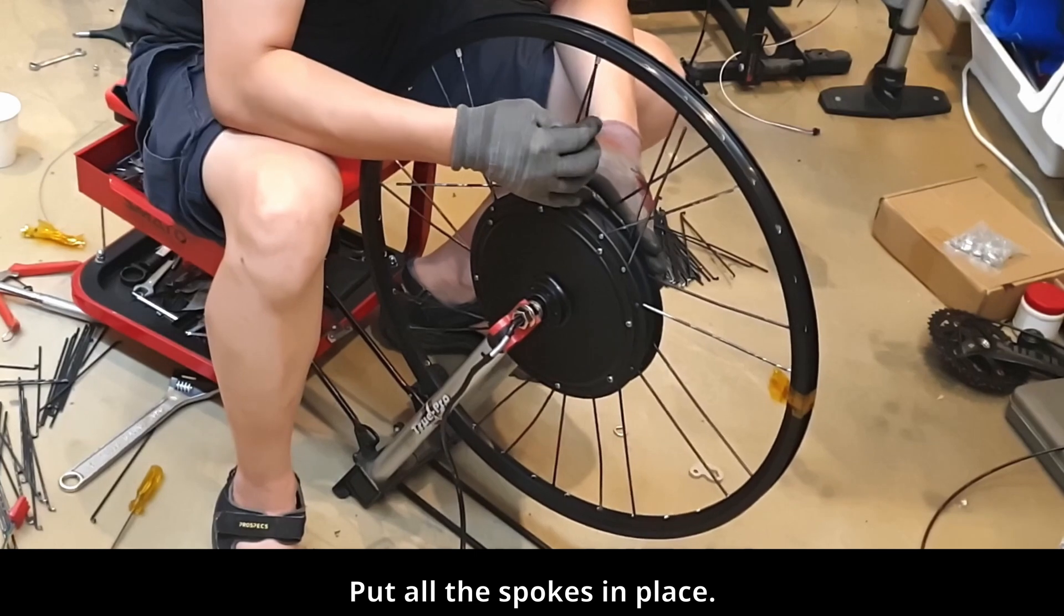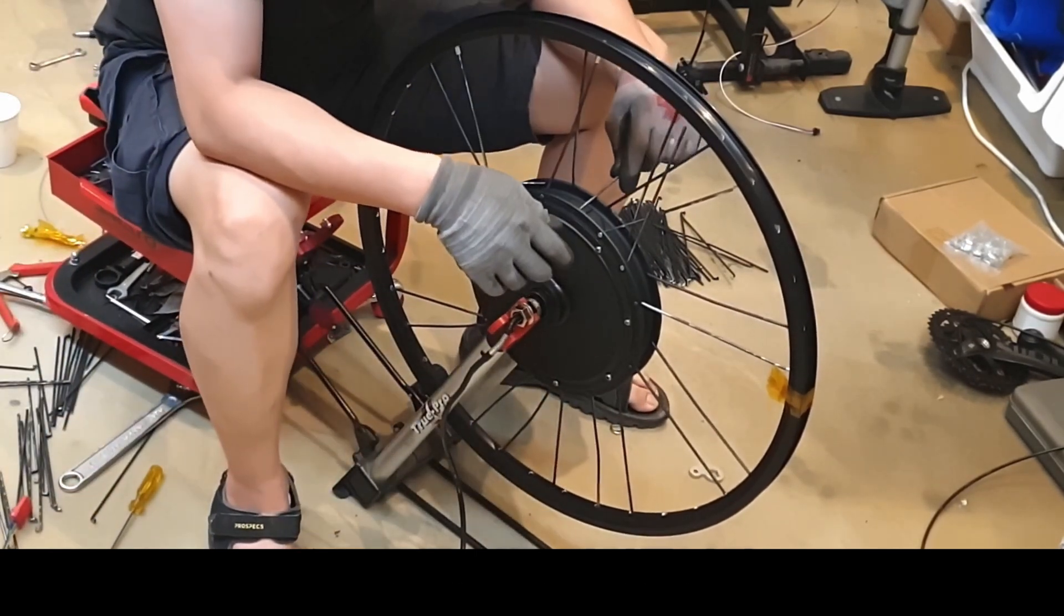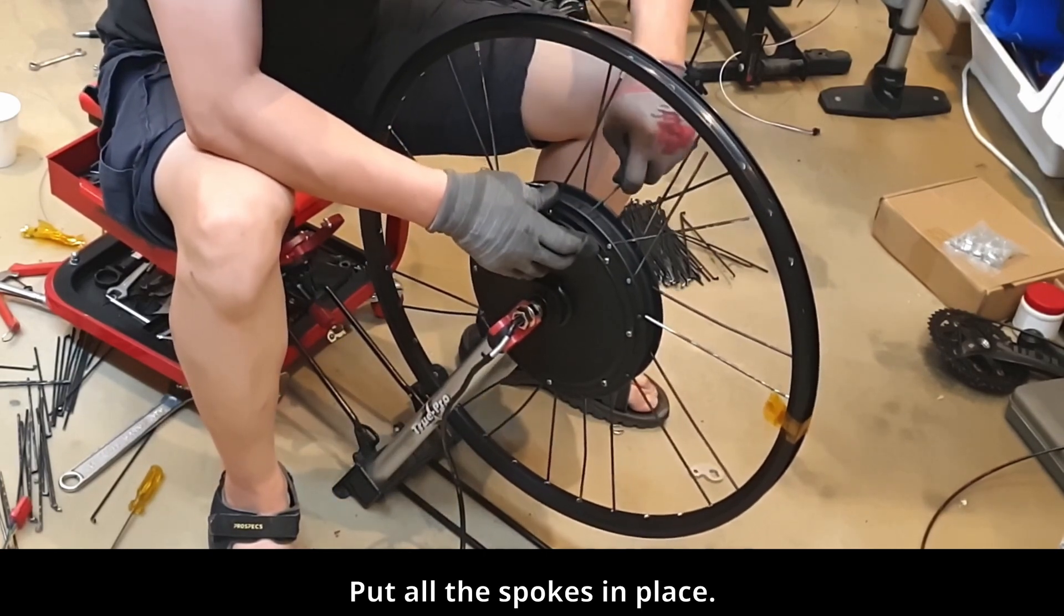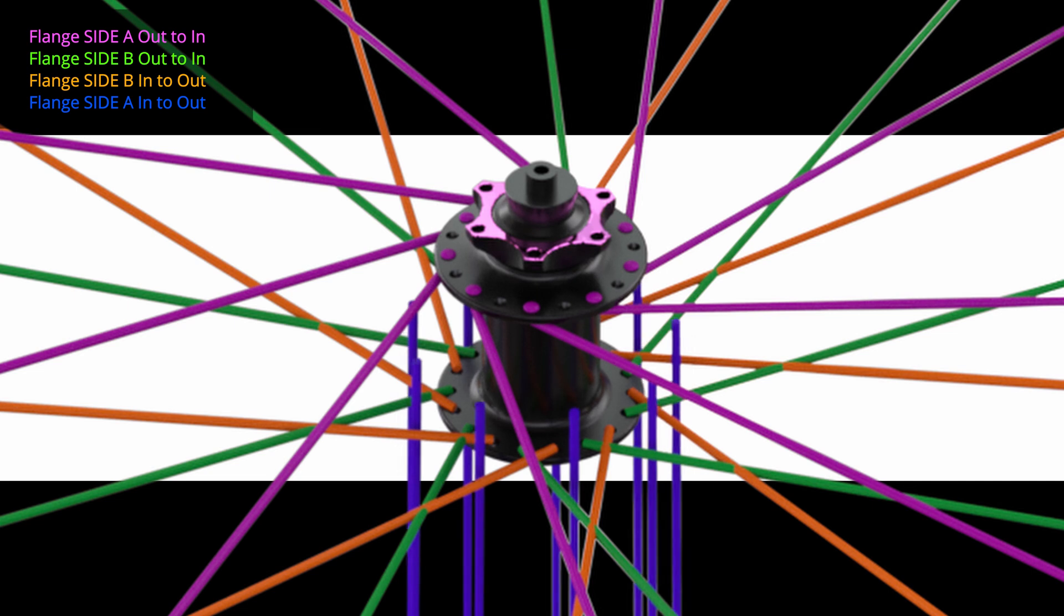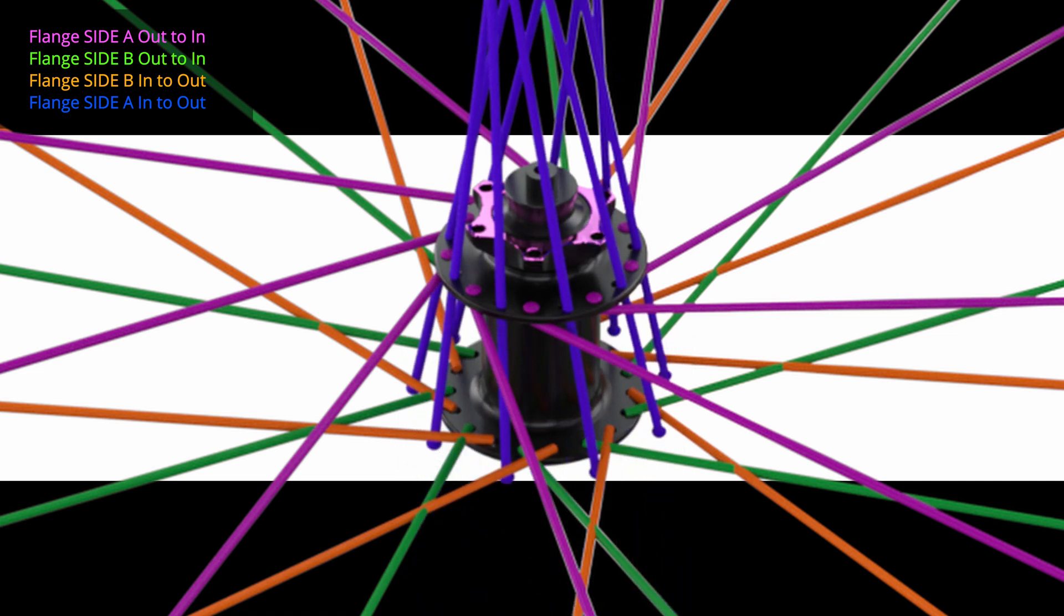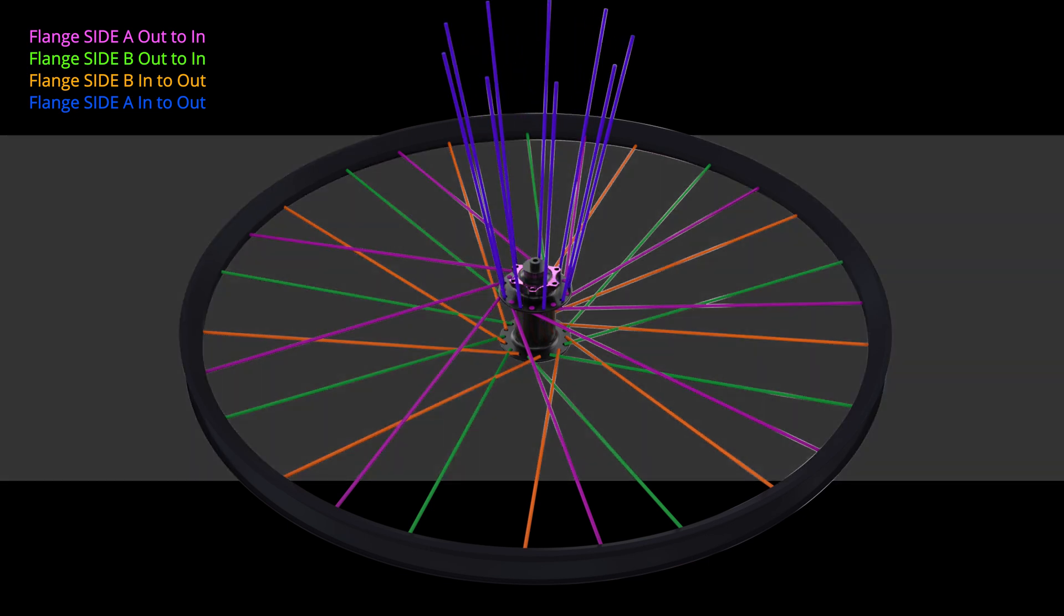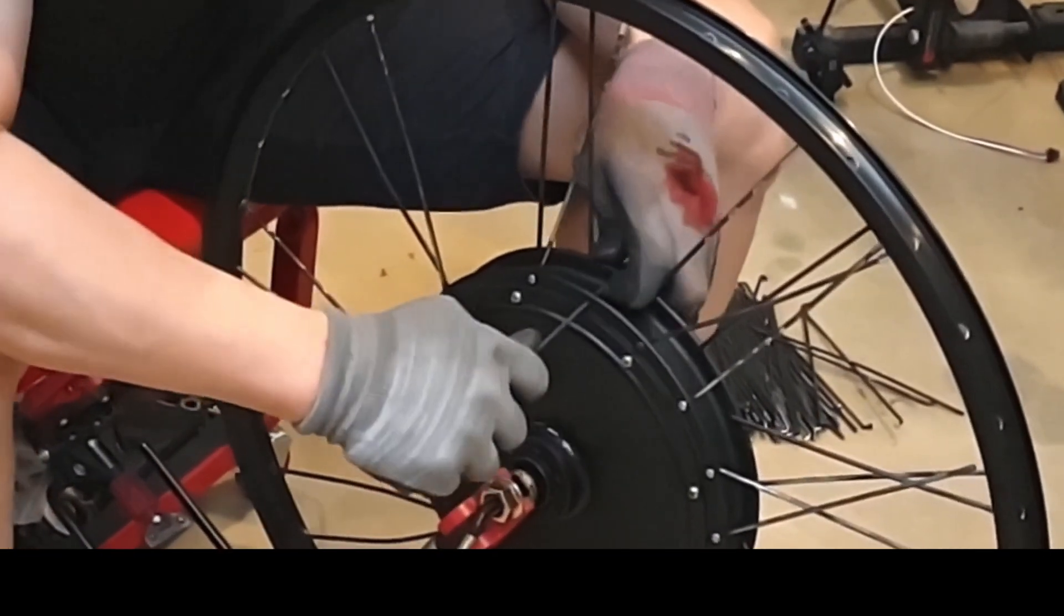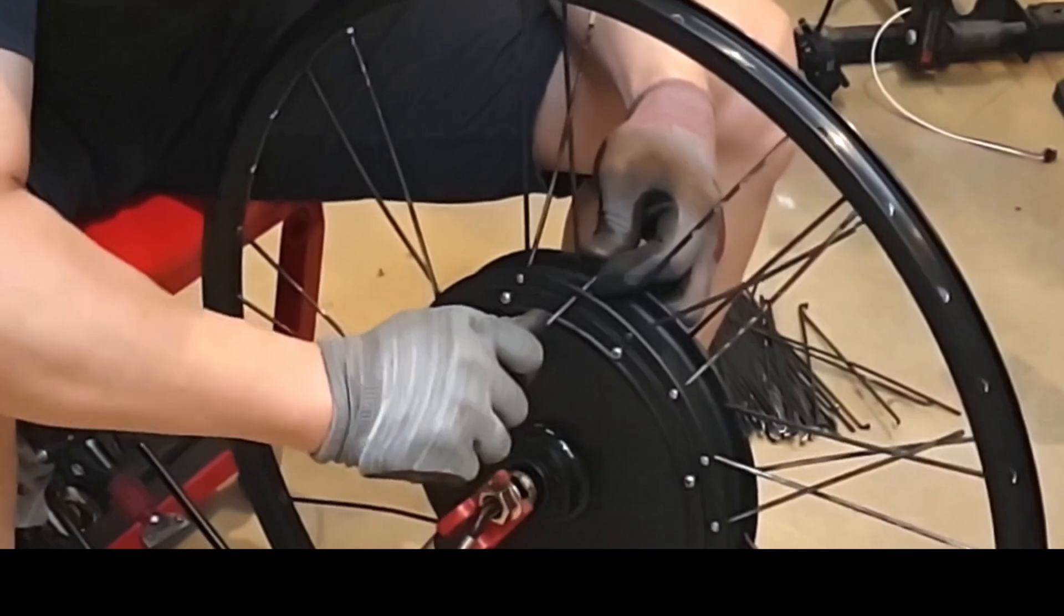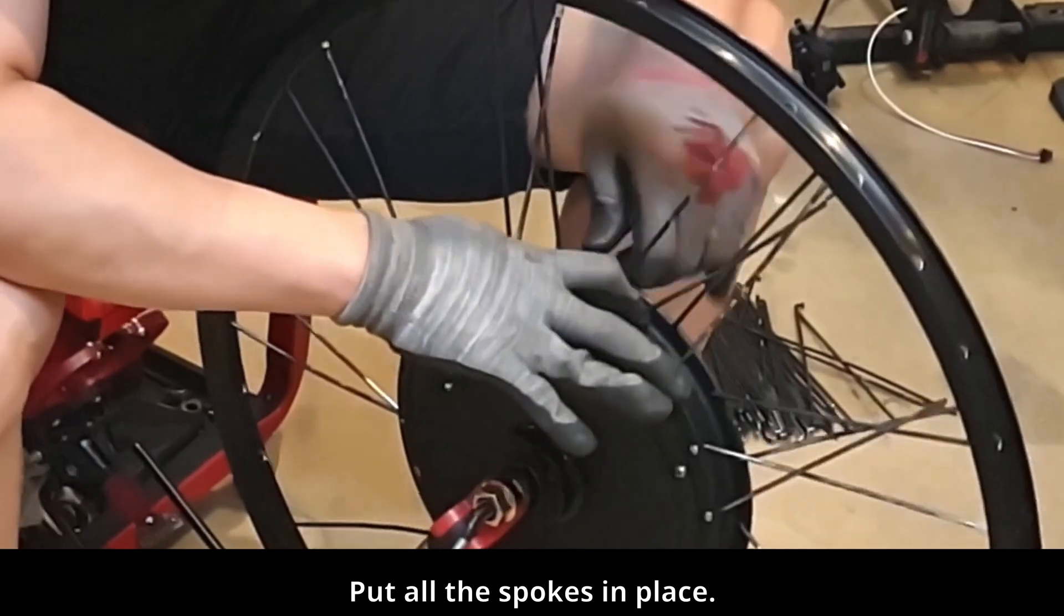Put all the spokes in place. Now, install on this side. Finally, the fifth step is to install the spoke in flange A outward from the inside. Put all the spokes in place.